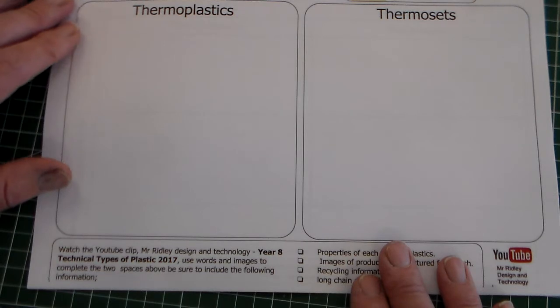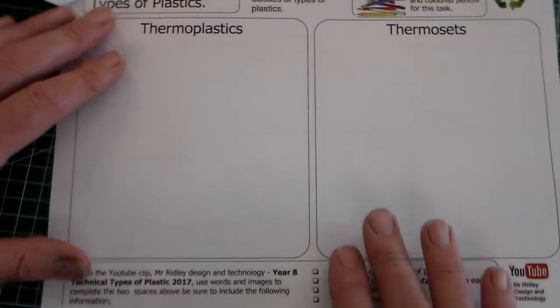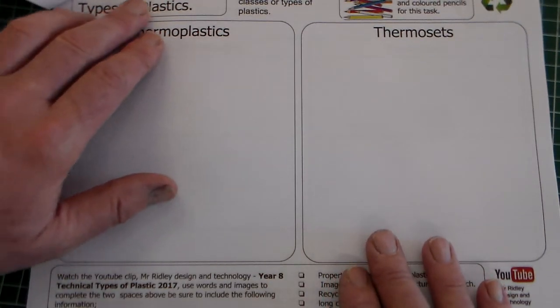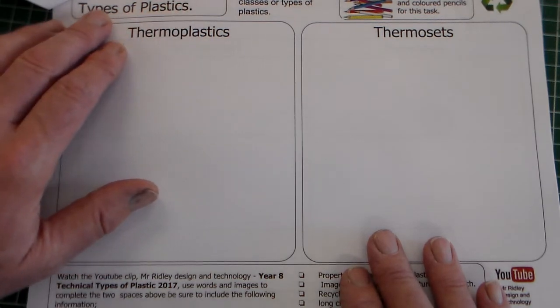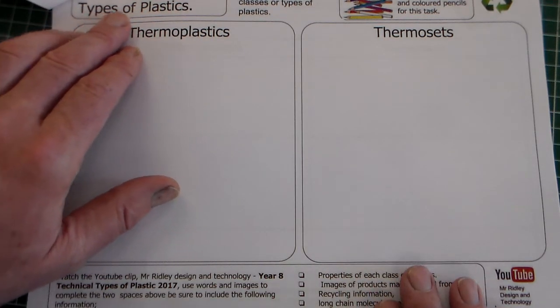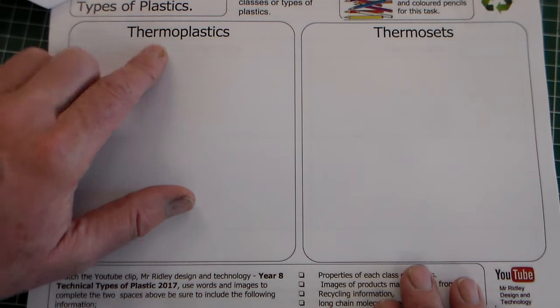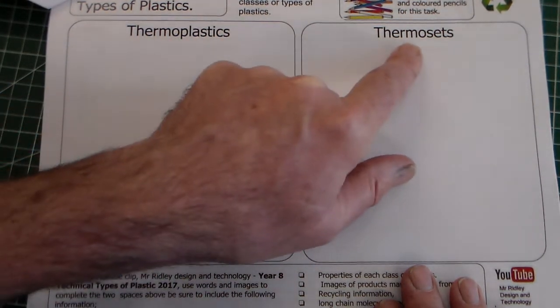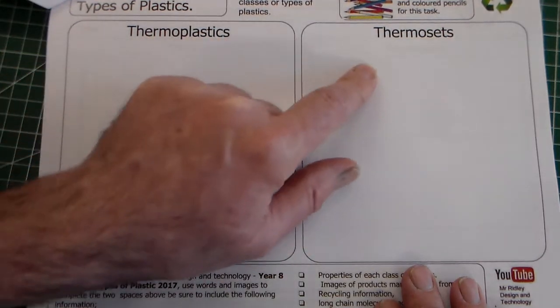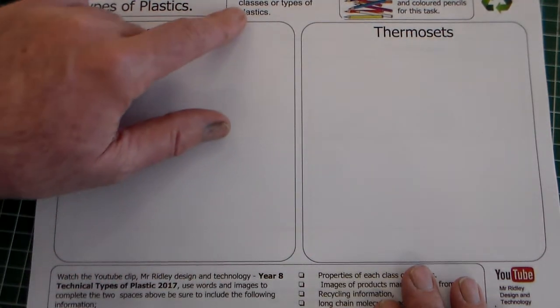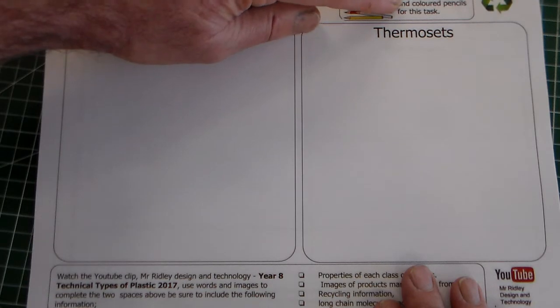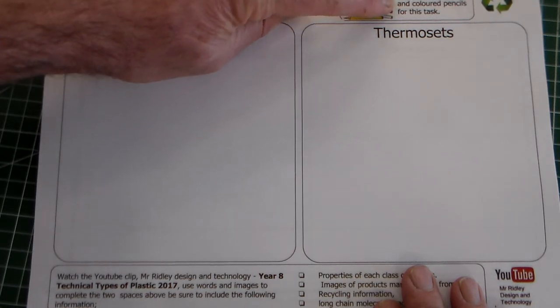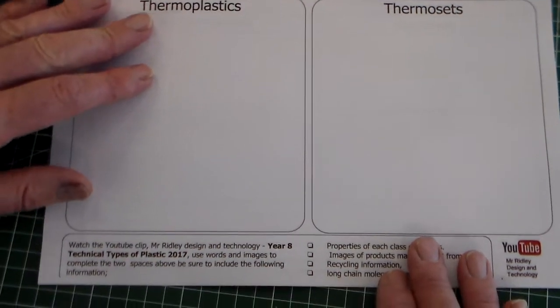Now we're looking at homework 4. Homework 4 is about plastics and types of plastics. We've got two boxes here with the words thermoplastics and thermosets. These are the two categories of plastic and you'll need coloured pencils or a pencil and coloured pencils for this task.